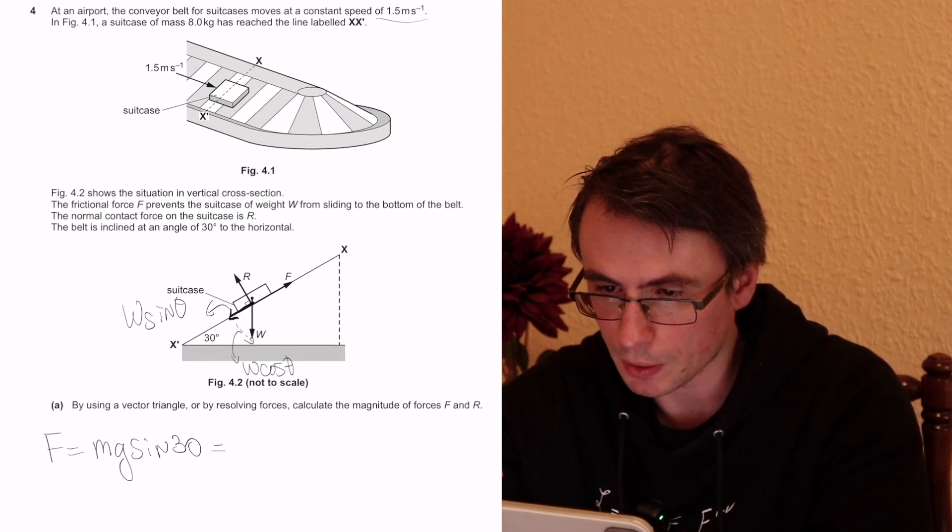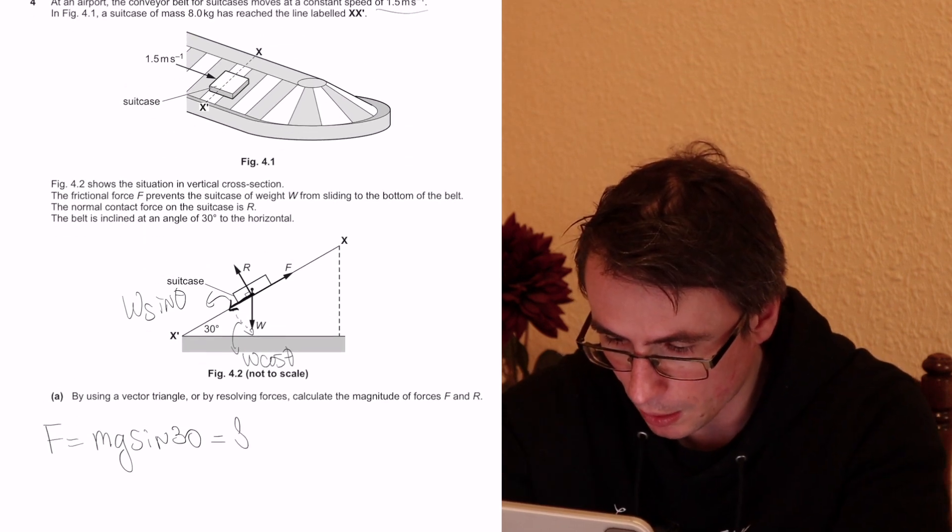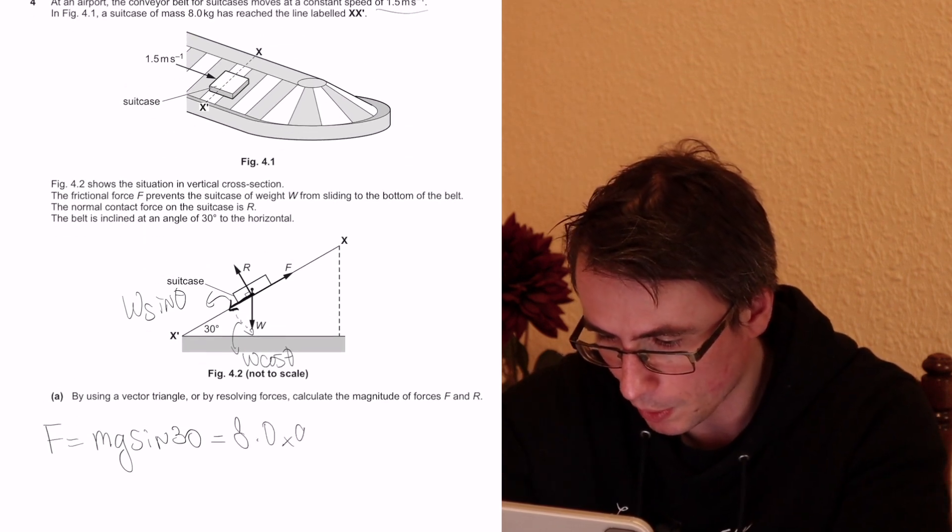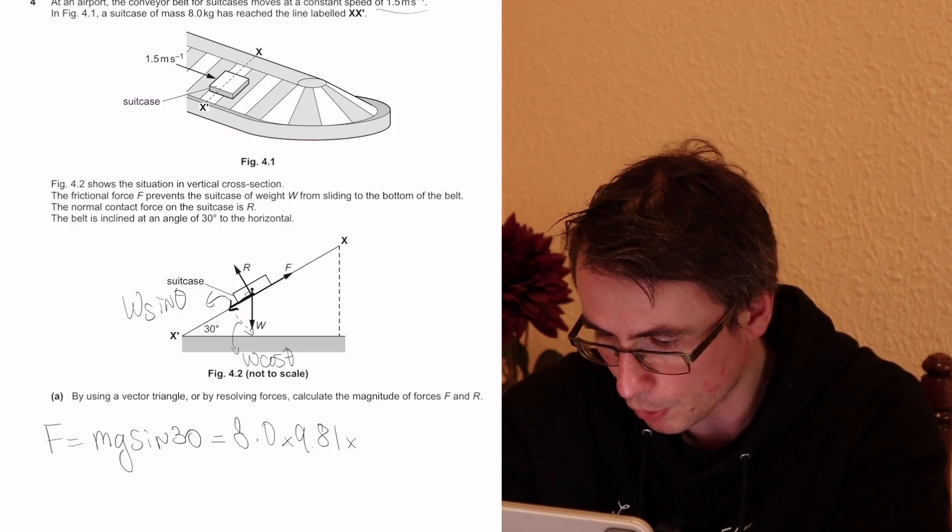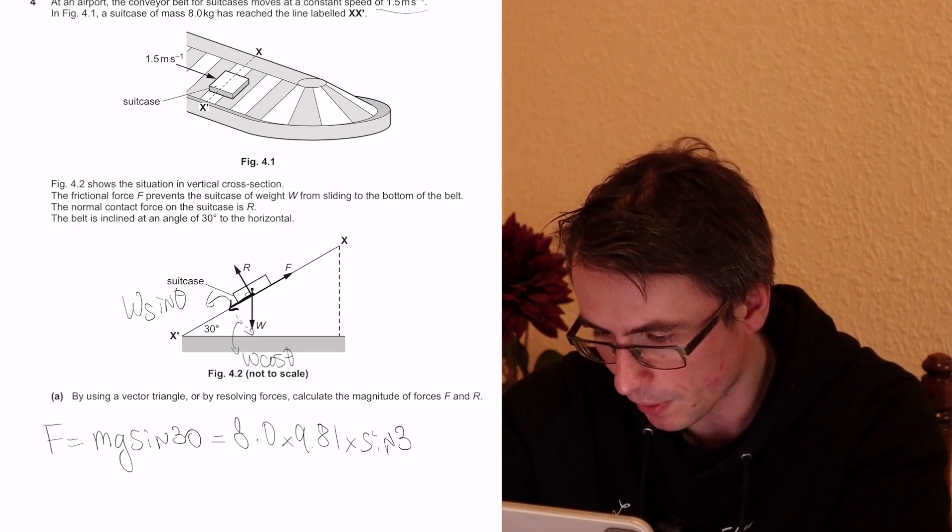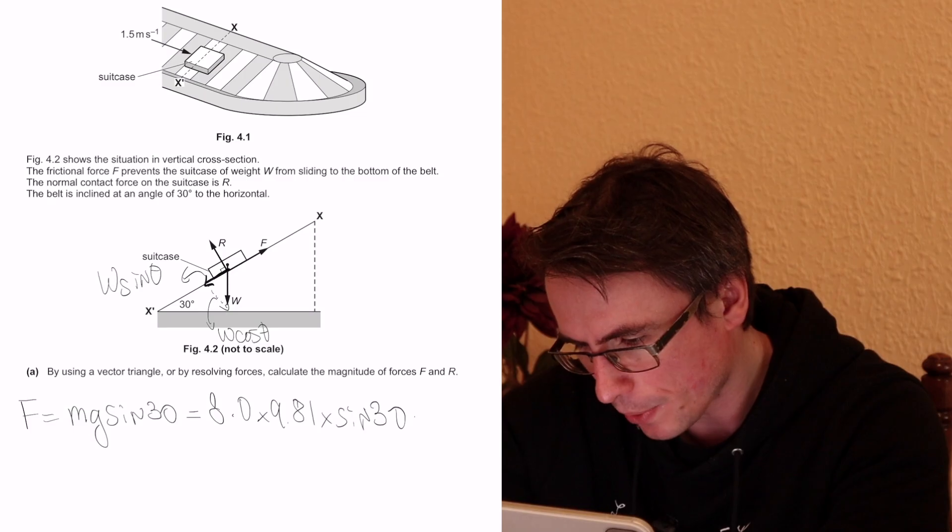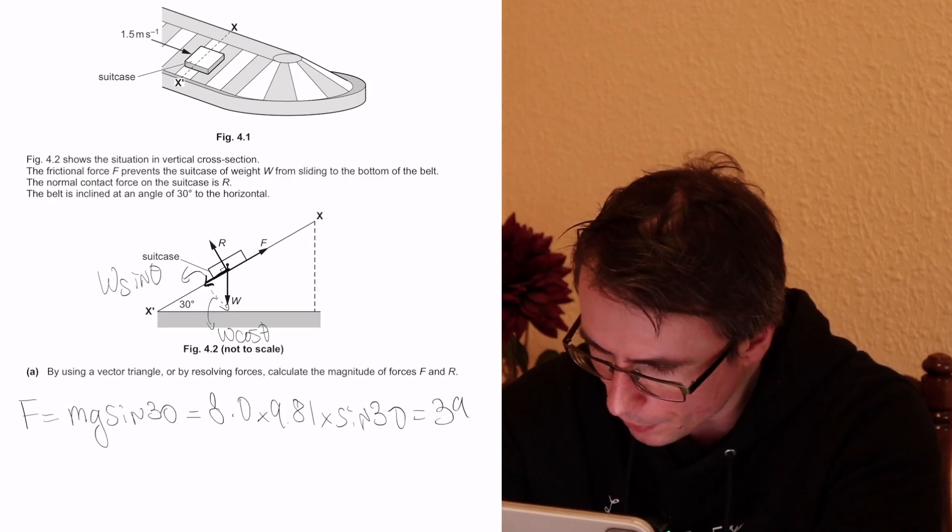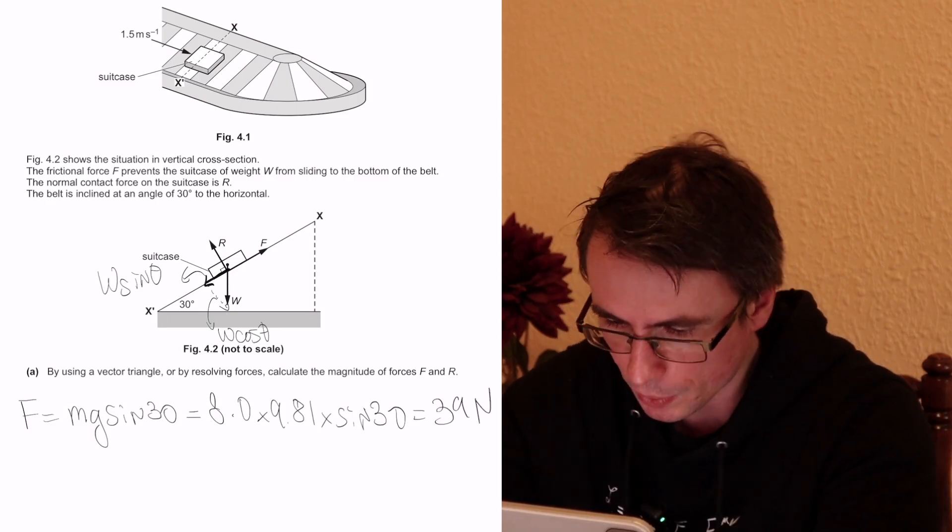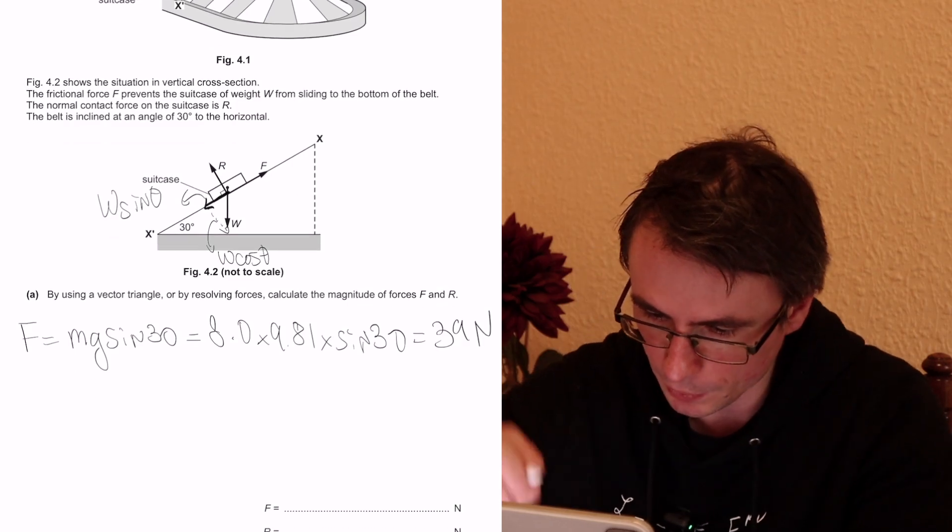So mg, what was the mass in this question? 8 kilograms. 8.0 times 9.81 multiply this by the sine of 30. And that's going to round up to around 39 newtons up to two significant figures.